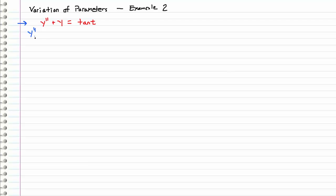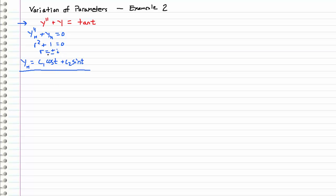As always, let's start with the homogeneous equation. This is a pretty easy one — we can jump straight into the characteristic equation. r is equal to plus or minus i, so the homogeneous solution must take the form of c1 cosine t plus c2 times sine t. Now that we have our homogeneous solution, all we have to do is drop the c's and add the u's. So our yp is going to take the form of u1 cosine t plus u2 times sine t, where u1 and u2 are functions of t that we will be solving for.